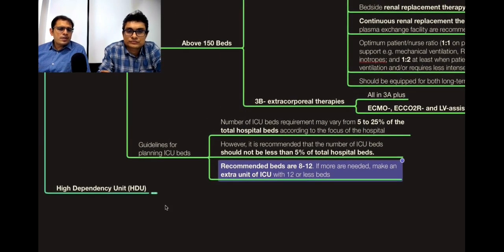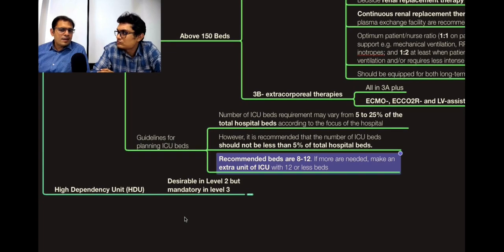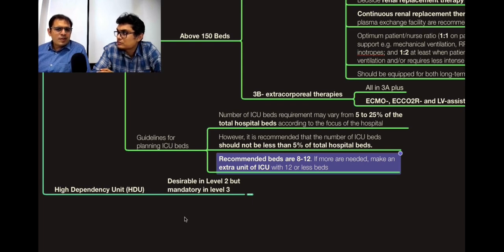The High Dependency Unit (HDU) is important for optimal ICU planning. ICU is the highest standard area, and if you only have ICU beds the cost of operations becomes very high. The HDU should be optimally utilized — as soon as a patient improves slightly, they can be shifted to HDU, followed by a ward shift. If the patient deteriorates in HDU, they can be shifted back to ICU. Shifting from ICU to HDU should be swift, and is desirable in level 2 but mandatory in level 3.